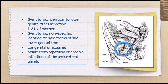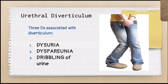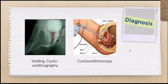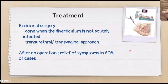Some patients will come in with dyspareunia, dysuria, and dribbling of urine in spite of treatment with antimicrobials. Think of urethral diverticulum in these cases. Diagnosis is by voiding cystourethrography and cystourethroscopy, performed by the urogynecologist. Treatment is excisional surgery — either transurethral or transvaginal approach, depending on whether the mass is more anterior or more posterior near the vaginal canal.